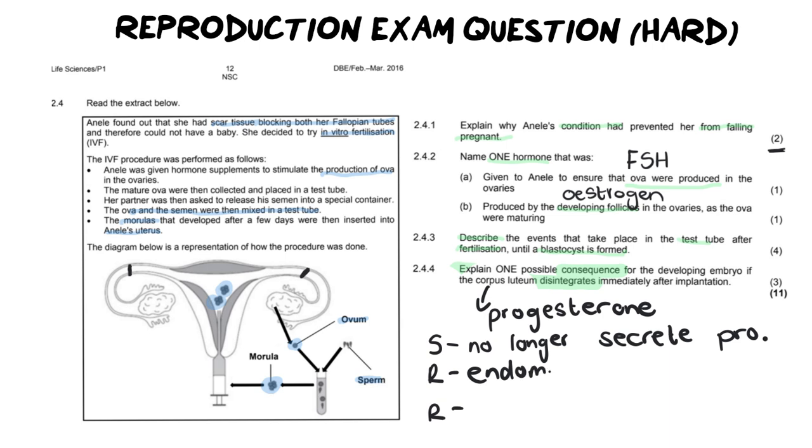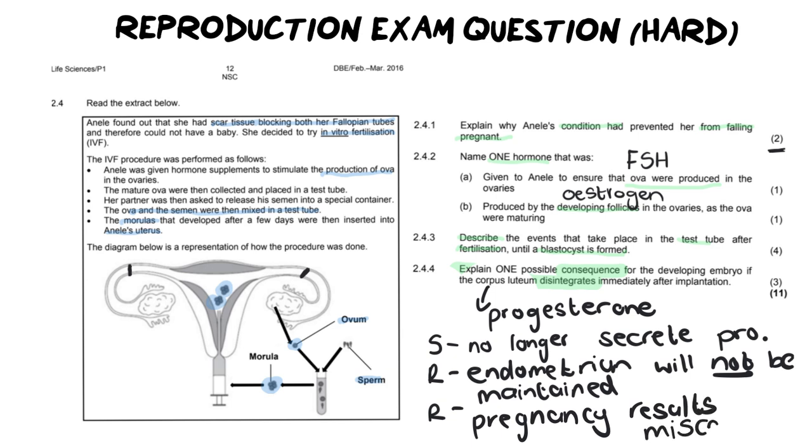The endometrium will not be maintained. And if the endometrium is not maintained, then the pregnancy will not be maintained. And that results in a miscarriage. So no longer secreting progesterone means the endometrium will not be maintained, and the pregnancy will result in a miscarriage. Again, this is the most application-like question out of all of them from this section. You've got to apply your knowledge to be able to see what happens if you take the hormone away.